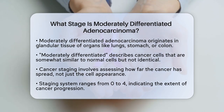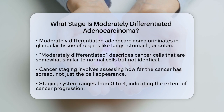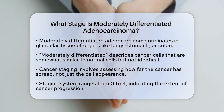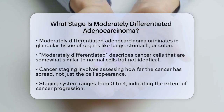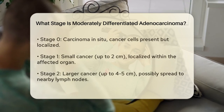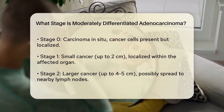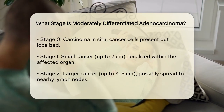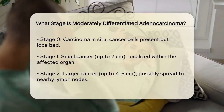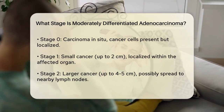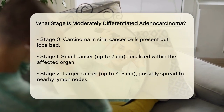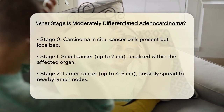When we talk about the stage of cancer, we're not just talking about how the cells look, but also how far the cancer has spread. The staging system helps doctors determine the best treatment plan and predict the outcome. Adenocarcinoma is typically staged from 0 to 4. Here's a brief overview of each stage.